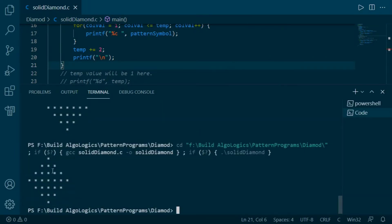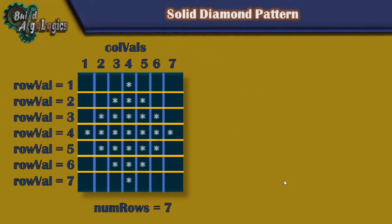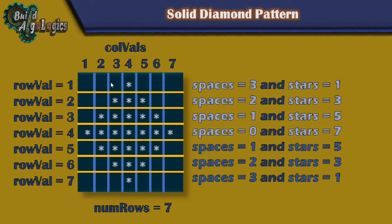Now we'll see our second method to print this diamond pattern using numbers as seven. For the first row the value of spaces is 3 and stars is 1. For the second row spaces are 2 and stars are 3. For row 3 spaces are 1 and stars are 5 — the value of stars is incrementing by 2 and the value of spaces is decrementing by 1.